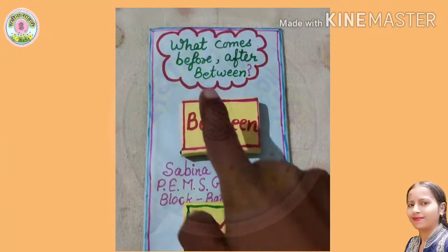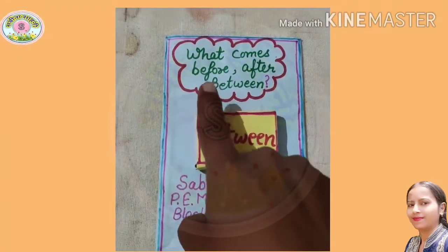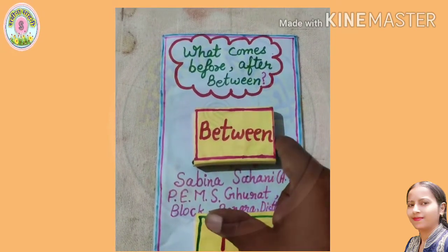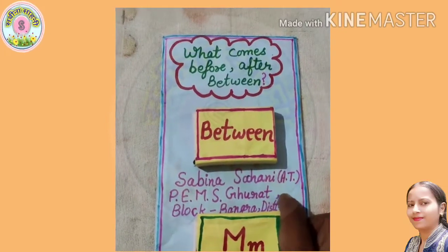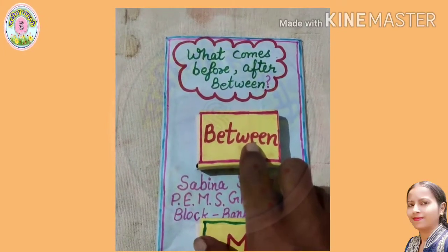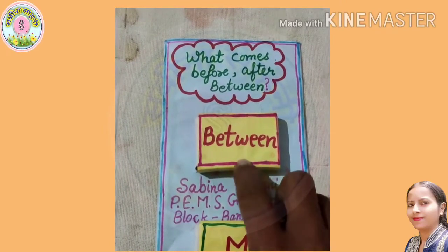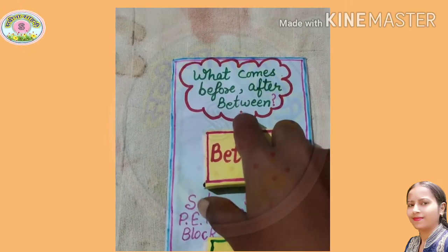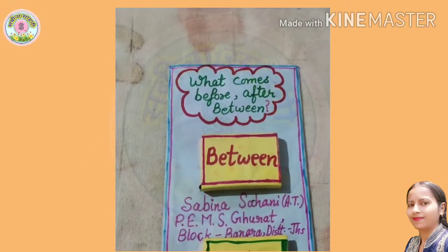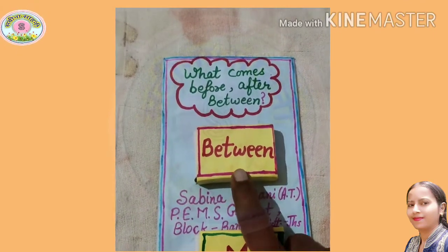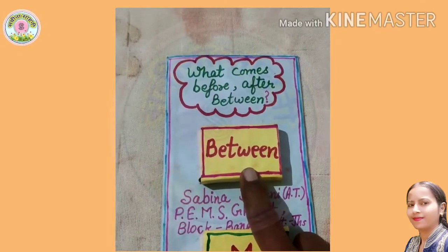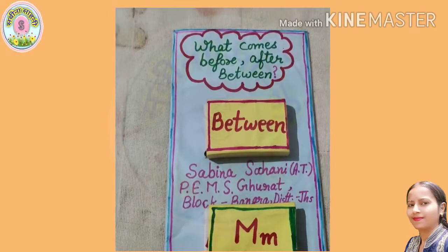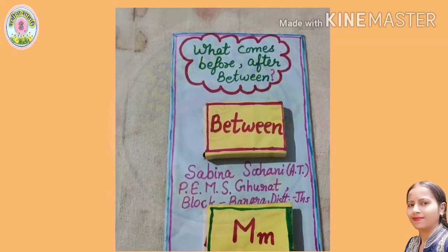What comes before? What comes after? What comes between? Here it is — a machine of waste material in which children can learn what comes before, what comes after, and what comes between. Children can learn from their own skills. This is the first thing you can do.